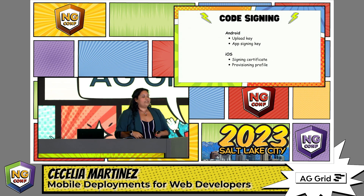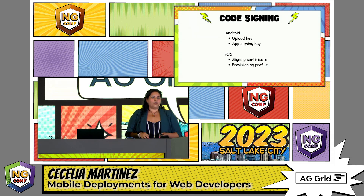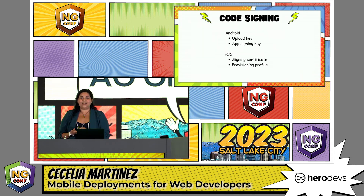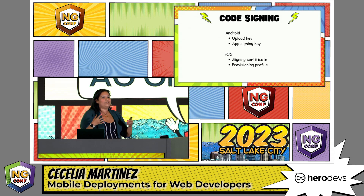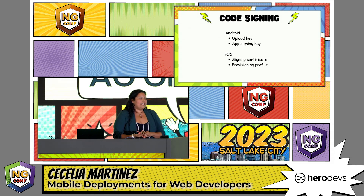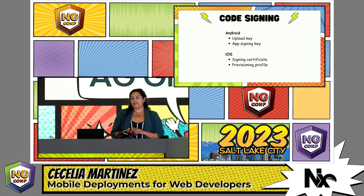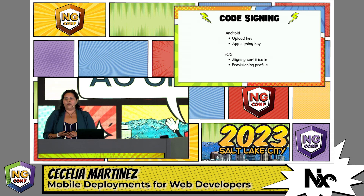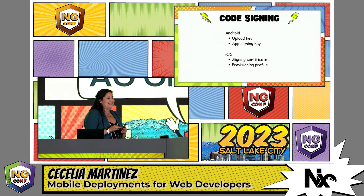On the Android side, you have the upload key and the app signing key. On the iOS side, you have a signing certificate and a provisioning profile. If you're looking to automate your process in CI/CD, these credentials need to be installed in your environment.